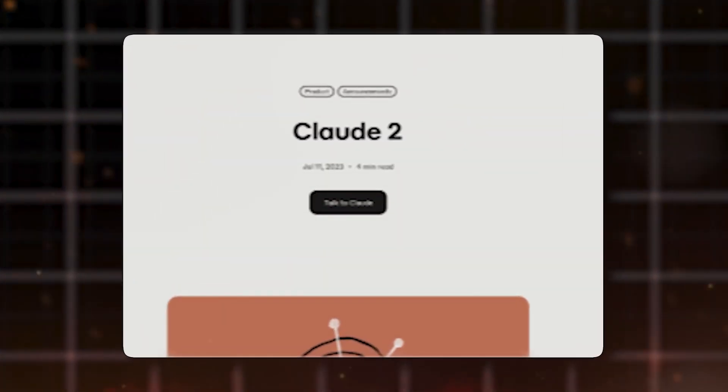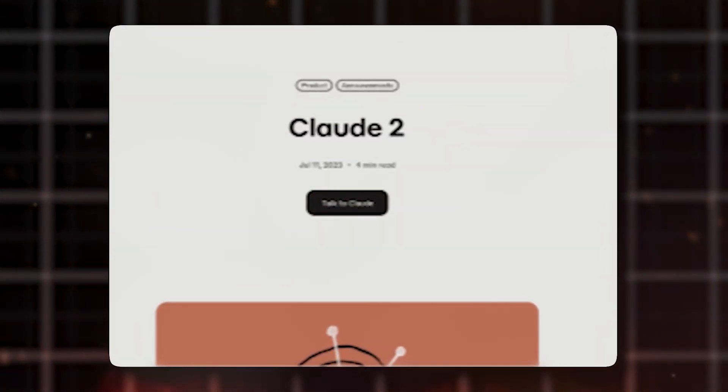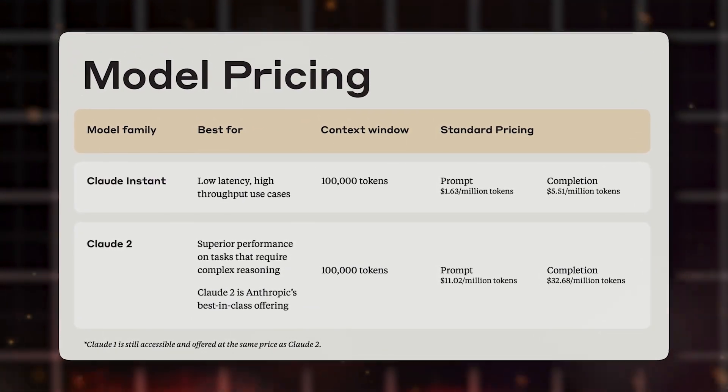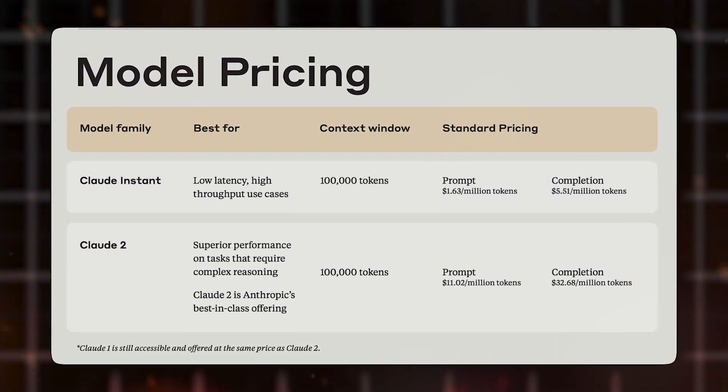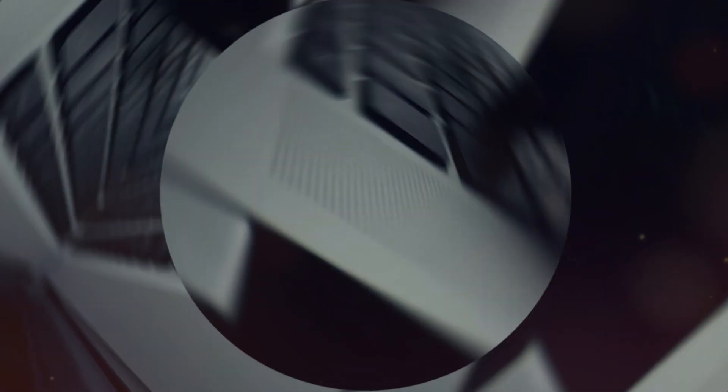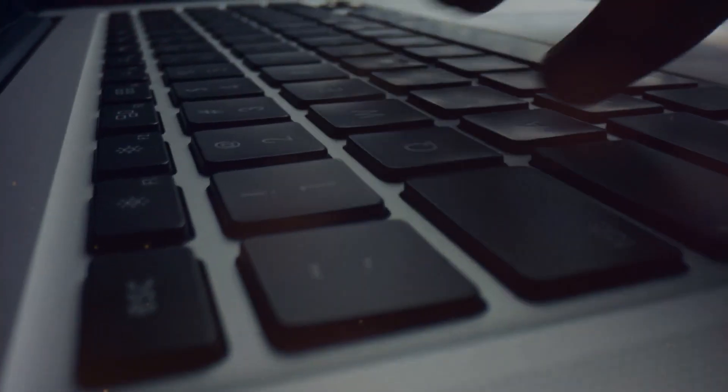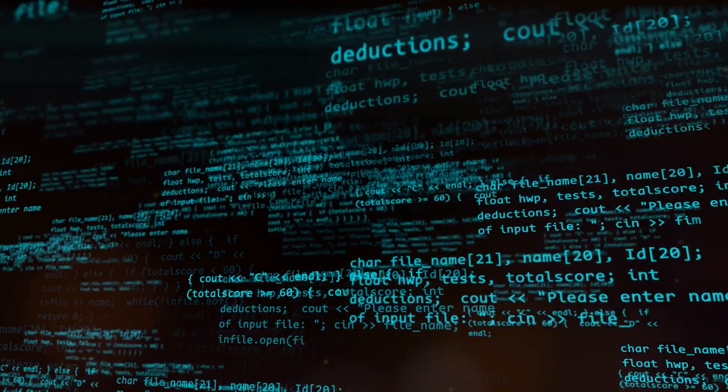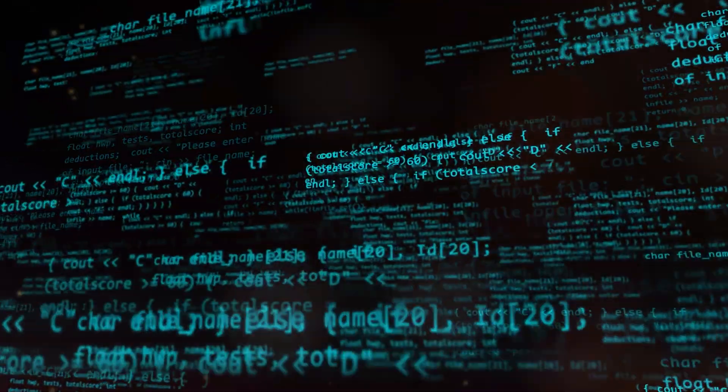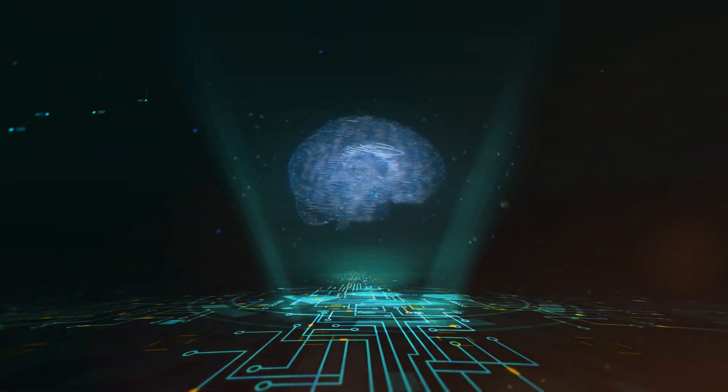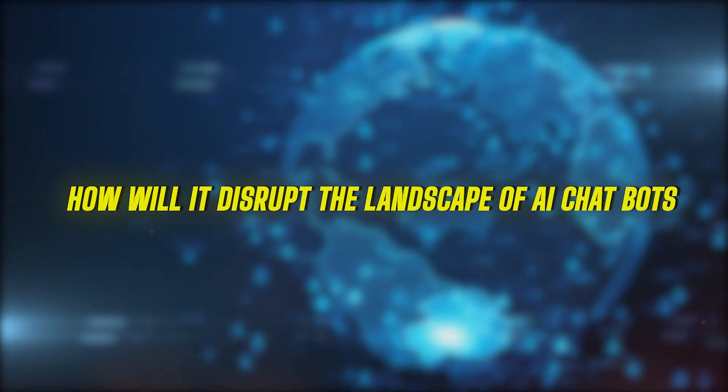On the other hand, with Claude 2, you pay less to use its API. According to Anthropic's website, the price of Claude 2 API is the same as Claude 1.3 API, which is $0.0465 to generate 1000 words. This means you can use Claude 2 for a fraction of the cost of ChatGPT and receive better performance, longer responses, and safer outputs. That is mind-blowing. So what does the future hold for Claude 2 and how will it disrupt the landscape of AI chatbots?